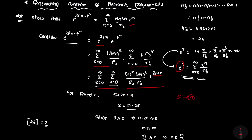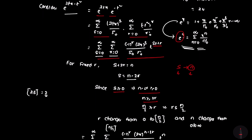By changing the limits automatically — since s equals 0 gives n minus 2r equals 0, so n equals 2r and r equals n/2 — r changes from 0 to n/2.